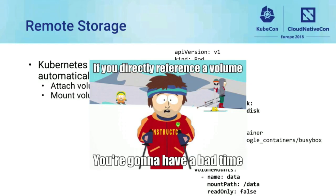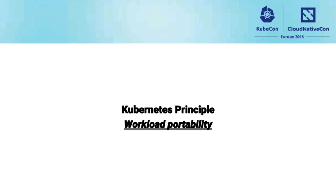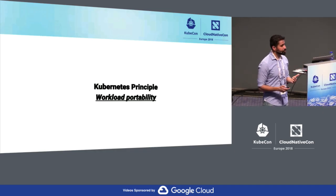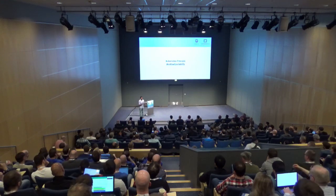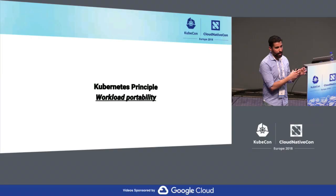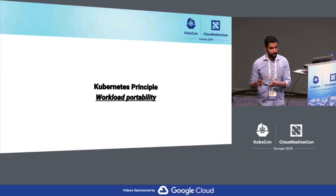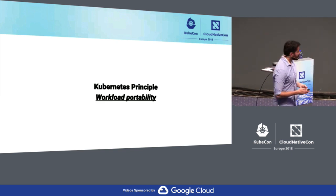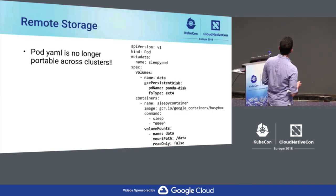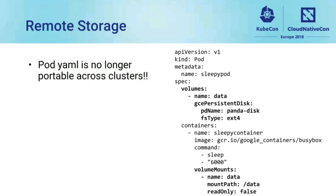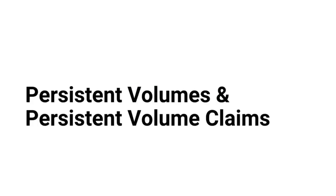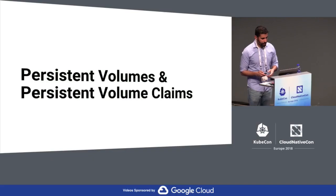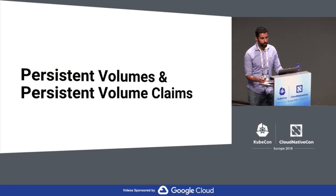But don't do this — do not reference volumes directly in your pod. The problem is workload portability. The YAML I just showed references GCE persistent disks directly inside the pod spec. If you move that pod YAML to a cluster running on Amazon, it won't work — there are no GCE persistent disks. If you move it on-prem, same problem. So how do we fix that? Persistent volumes and persistent volume claims — this is the solution to workload portability for storage across clusters. It decouples storage implementation from storage consumption.